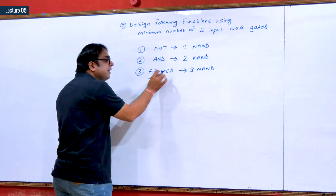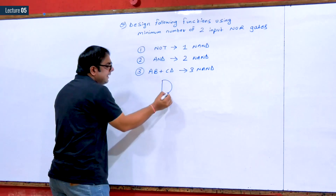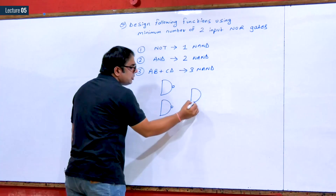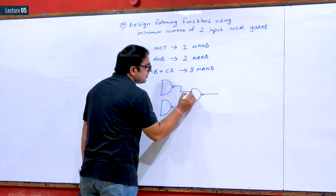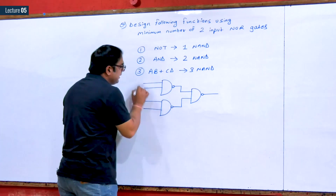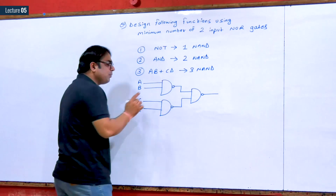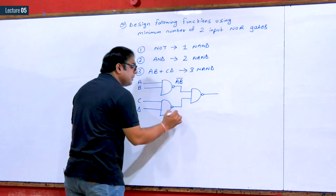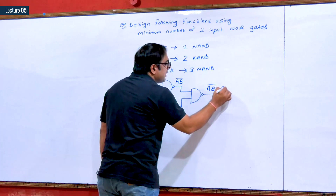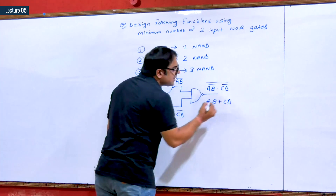Now, how can we design AB plus CD using three NAND gates? Three NAND gates means two NAND gates whose outputs are both fed into a third NAND gate, with inputs AB and CD in sequence. So at the output we get AB complement dot CD complement, whole complement, which on solving gives AB plus CD.